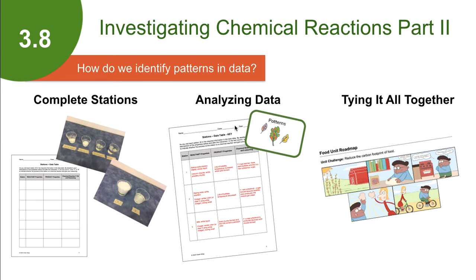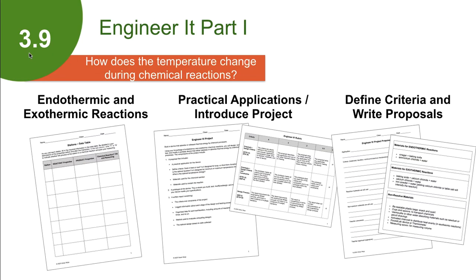We then revisit the unit roadmap and focus on the frame about baking bread. During the class discussion, students conclude that all cooking is a chemical reaction because they've seen the different types of evidence they can use to see that new substances are formed.